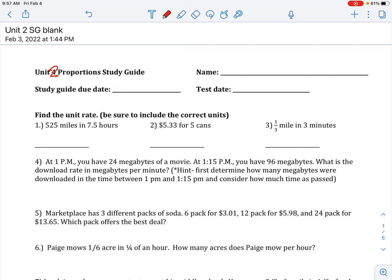Number 1 through 3, you're finding the unit rate, so you're simply dividing your first number by your second number. You get 70 for number 1, you get 1.07 for number 2, and for the third, let's work this out: 1 third divided by 3 over 1. You're going to keep change flip, 1 third times 1 over 3 gives you 1 over 9.